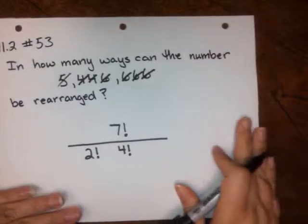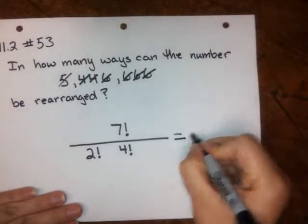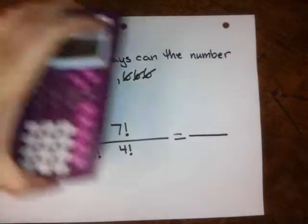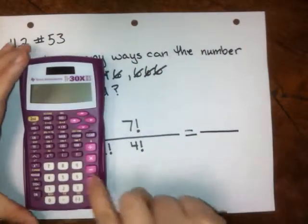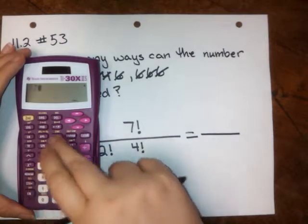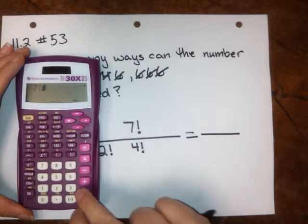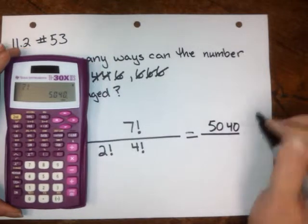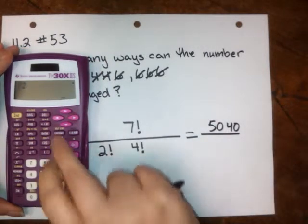I guess I made my line a little bit long there in the fraction. But now we can solve this. So what is seven factorial? Let's figure it out. Seven factorial, well, that's 5040.